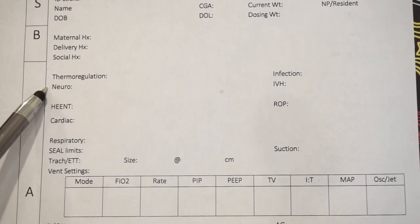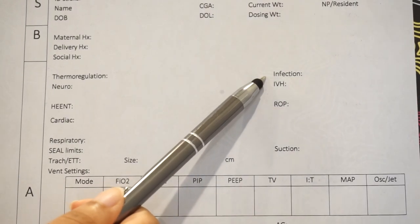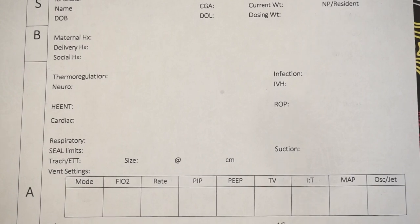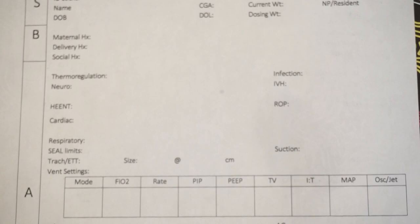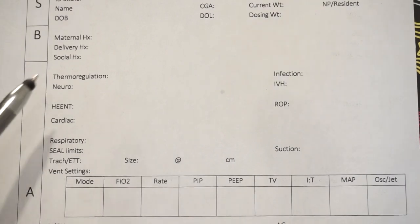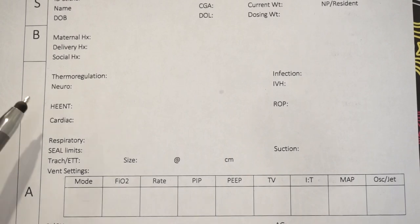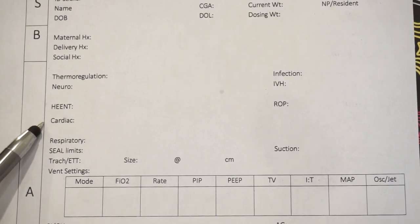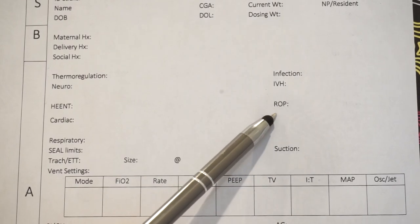Neuro, are they appropriate, do they have something going on? Infections would be if they're on antibiotics or if they had a workup recently, like blood cultures, we discussed that there. IVH would be like if they have a grade 3, some type of brain bleed or something going on, and we talk about their head ultrasound. So HEENT stands for head, ears, eyes, nose, and throat. Cardiac, do they have a murmur or any heart issues that we need to know about? ROP is retinopathy of prematurity, so we talk about their eye exams.